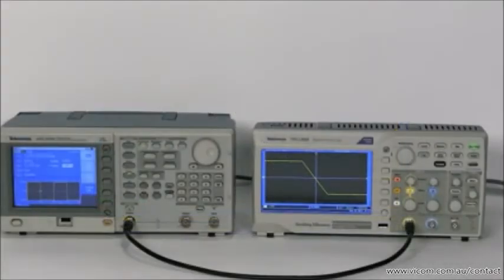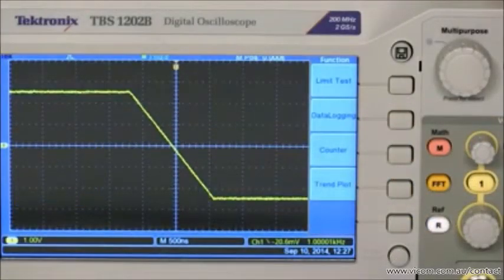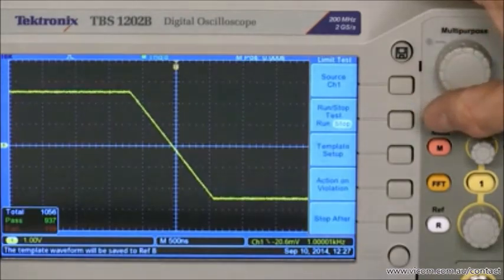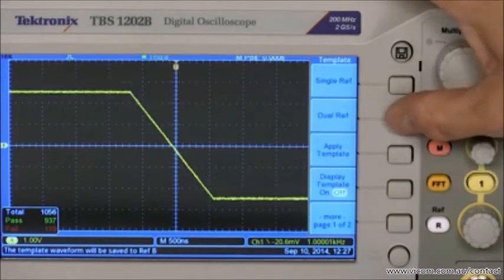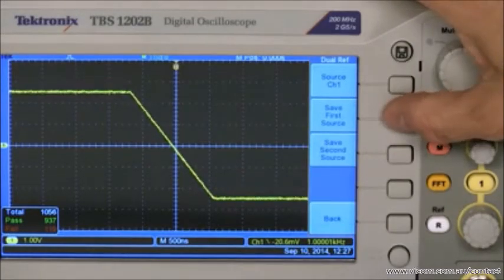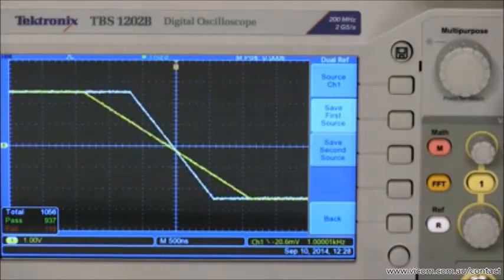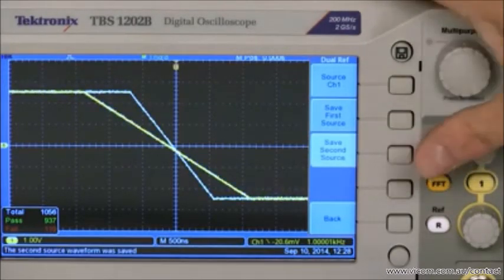Let's say the input signal has a fall time with an acceptable range of one to two microseconds. We'll start defining the template by inputting a signal with a one microsecond fall time and specifying it as the first source. Now we change the fall time of the waveform to two microseconds and specify this new waveform as the second source.